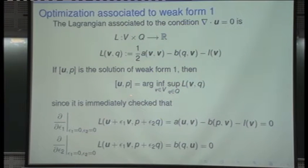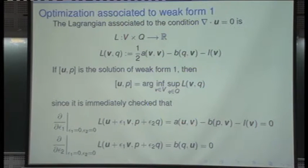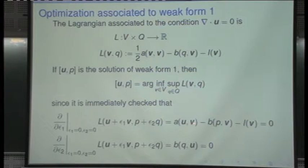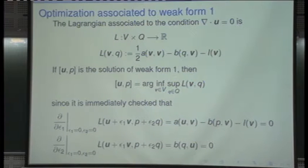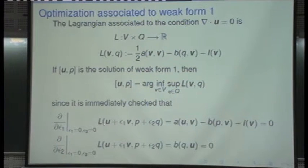If you take the second derivative with respect to epsilon, it is going to be a(u,u), which is positive. So we have a minimum with respect to u — the velocity has a minimum at the solution.